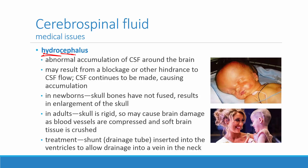In adults, because the skull is rigid and the bones can't press apart, instead of the head swelling in size, the brain gets squeezed by the accumulating cerebrospinal fluid. As blood vessels get compressed and blood flow is reduced, that can lead to significant brain damage. The treatment is a shunt — a drainage tube implanted just under the scalp that drains cerebrospinal fluid down through tubing to one of the neck veins, where venous flow carries away the excess CSF.